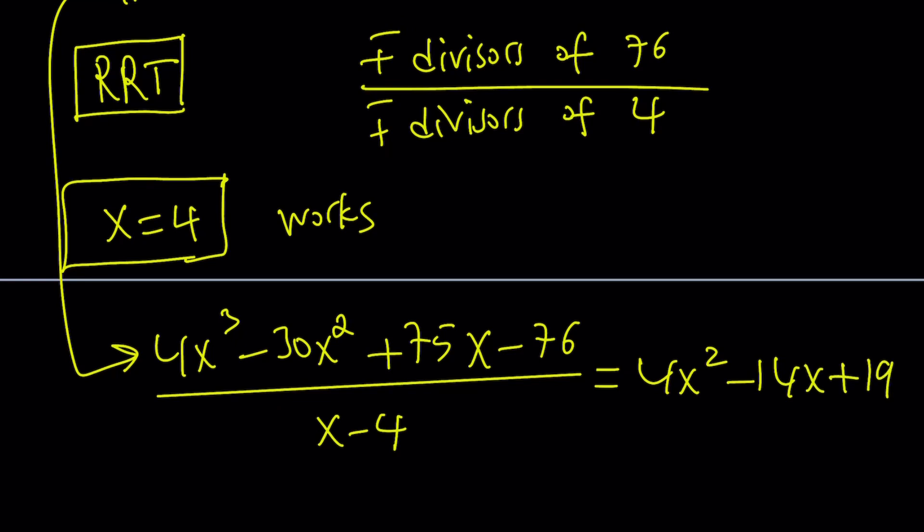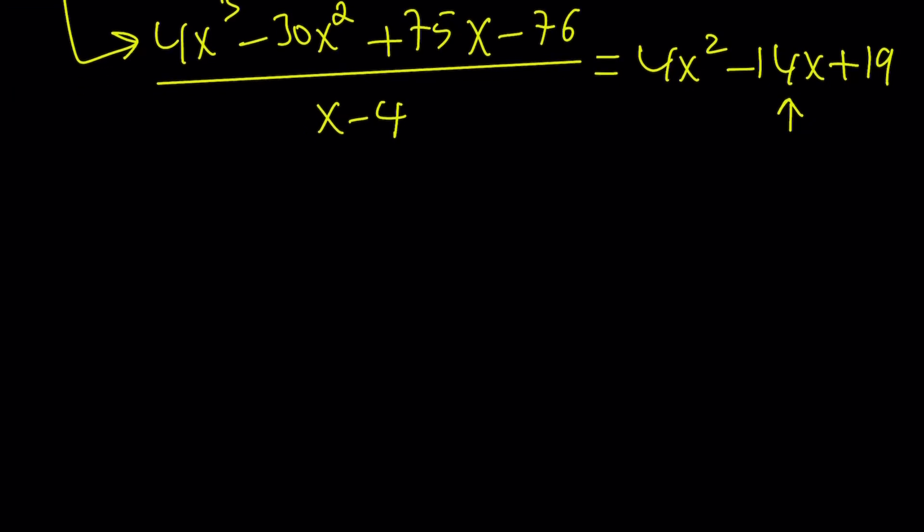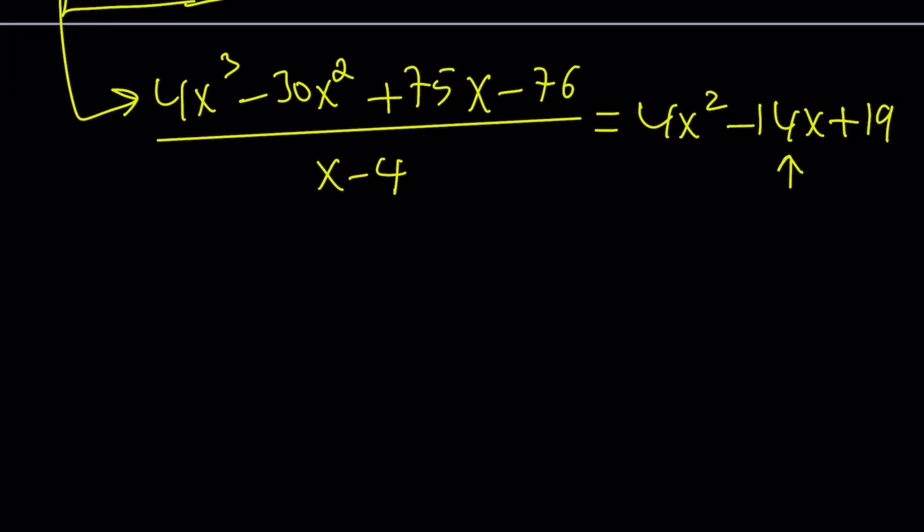So knowing that 76 is divisible by 4, it kind of makes it a little easier. And also 4x cubed divided by x is 4x squared. So the only thing you need to find is the coefficient of x, which can be also found by setting it equal to like a bx and then, you know, cross multiplication, so on and so forth. So that's not too hard to do. So that is our quadratic and that's our linear factor. So we got two factors and we already know x equals 4 is a solution. So let's go ahead and set this equation equal to 0 and find the roots from here.